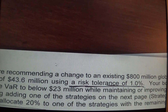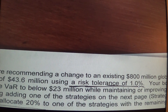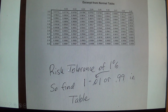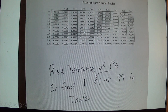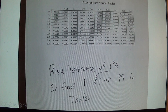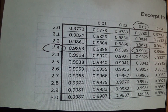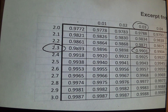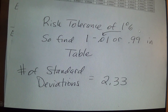We need to convert these into values at risk. The risk tolerance is 1%, but the table doesn't show that side of the distribution, so we look up 1 minus 0.01 = 0.99. Finding 0.9901 in the table requires interpolation — it's 2.3 in the column and 0.03 in the rows — so a 1% risk tolerance represents a 2.33 standard deviation event.